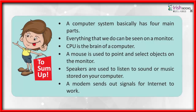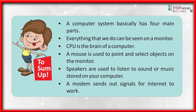A computer system basically has four main parts. Everything that we do can be seen on a monitor. CPU is the brain of a computer. A mouse is used to point and select objects on the monitor. Speakers are used to listen to sound or music stored on your computer. A modem sends out signals for the internet to work.